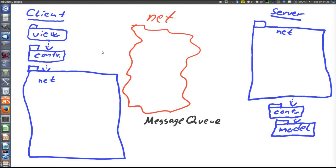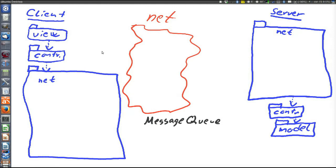First let's consider the case that one client wants to send a message and this message shall be broadcasted to all other clients. Here the message queue's publish-subscribe messaging domain will be used. In this messaging domain a topic is defined, which is like a logical identifier. Client 1 can publish a message to a certain topic, and clients 2 and 3 can ask the message queue for subscription to a particular topic. So when a message is published by client 1 to the topic, the message will be delivered by the message queue to all clients 2 and 3 that subscribe to that particular topic.